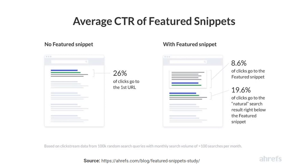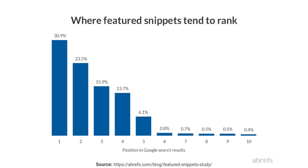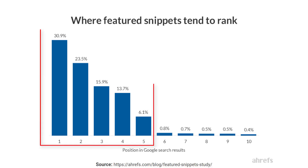From this Ahrefs study that analyzed 2 million featured snippets, they found that for SERPs with featured snippets, 8% of all clicks were going to the featured snippet. And 99% of featured snippets are pulled from the top 10 results. Just under a third of the snippets come from the number one spot, and most of them actually come from the top five ranking positions.